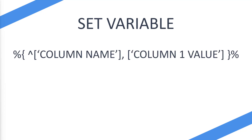To create a table, you use the percent sign, then a curly bracket, then an up arrow, then a square bracket, then quotation marks for the column name, close the quotation marks and square bracket, then a comma, then another square bracket, a quotation mark, the value, close the quotation mark and square bracket, then close with a curly bracket and percent sign. That sounds very complicated, but let's take a look at an example.